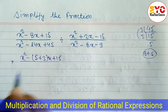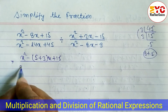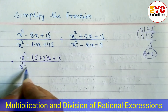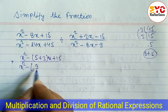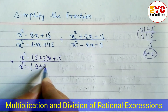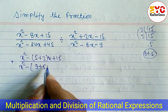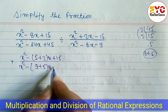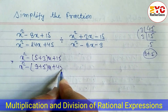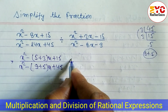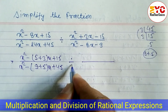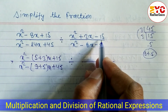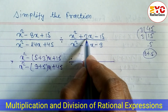So we have to find the factors: x² minus — in the place of 14 we can write (9 + 5)x — so x² minus (9 + 5)x plus 45, divided by the next expression.